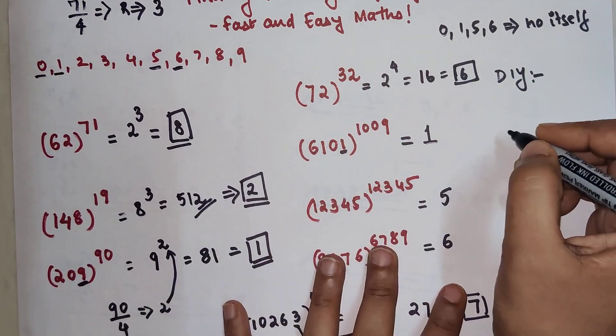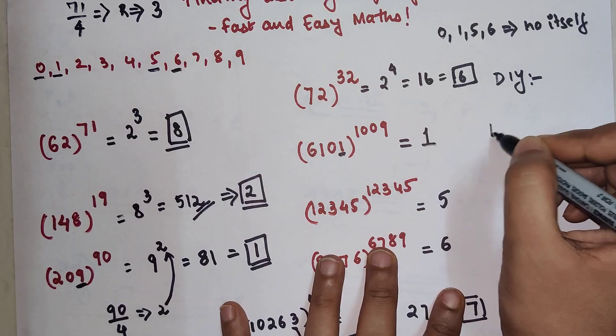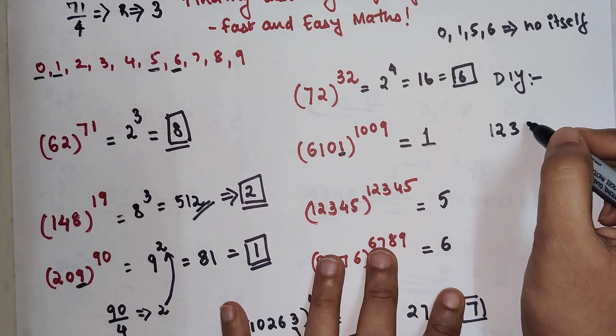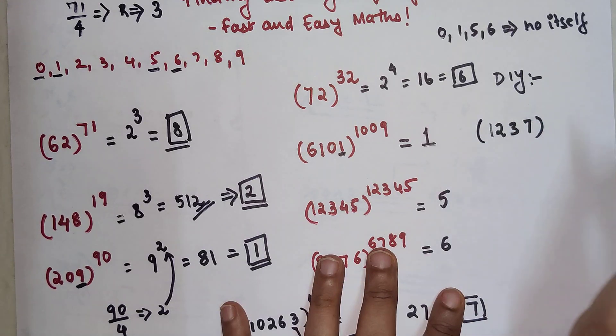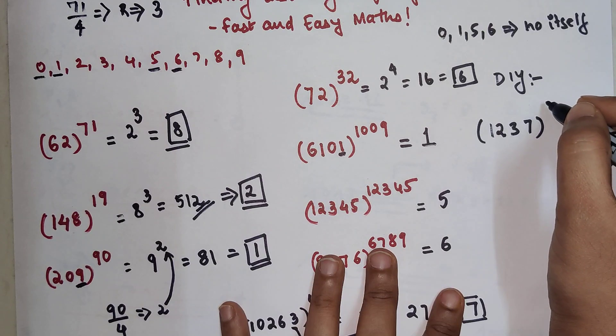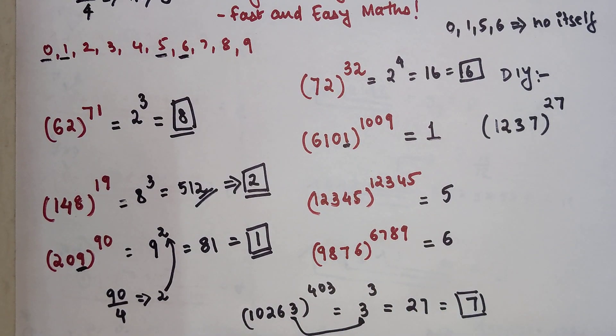Now coming to the DIY, I want you all to tell me: what is the answer of 1237 raised to 27? Do let me know your answers in the comment section. That's it for today. I will soon see you in the next video.